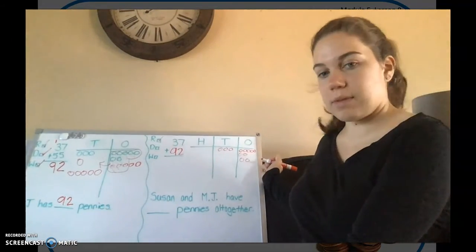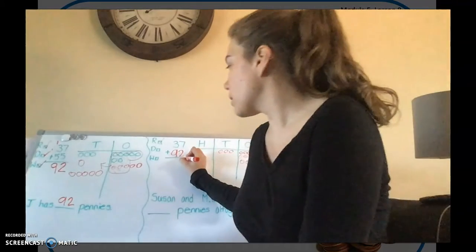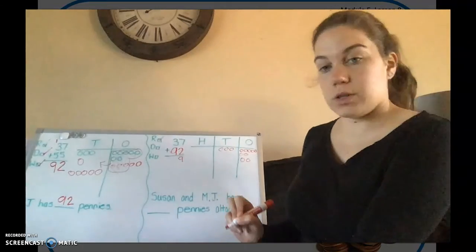So let's count how many ones we have now: 1, 2, 3, 4, 5, 6, 7, 8, 9. We don't have to do anything.